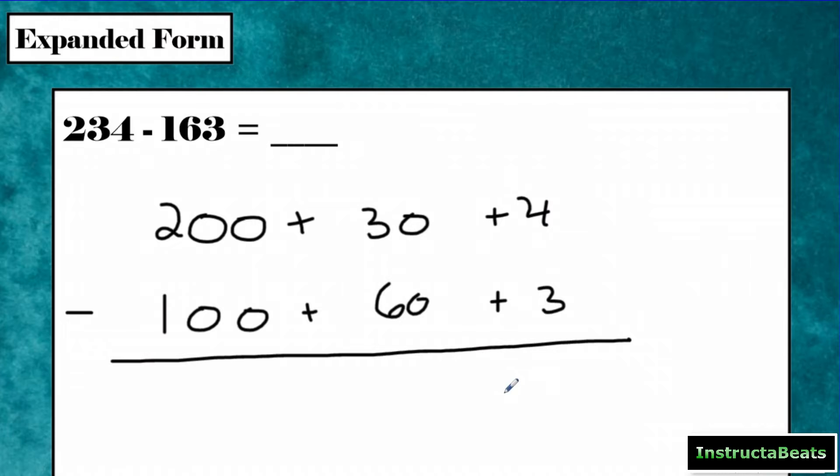Four minus three, more on the top, no need to stop. So four minus three is one. 30 minus 60, more on the floor, go next door and get 10 more.